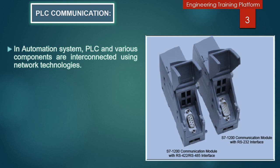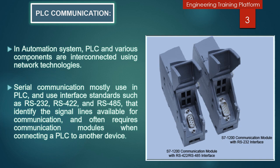Both are communication modules for the S7-1200. In an automation system, PLC and wireless components are interconnected using network topologies. Serial communication is the most basic form of data communication used by PLCs, because it involves transmitting data one bit at a time on a signal line, and receiving data on another signal line or in some cases the same line.